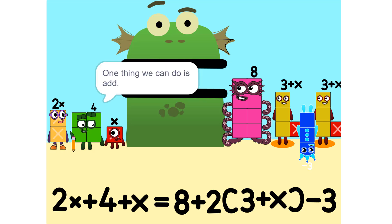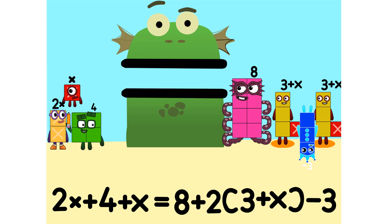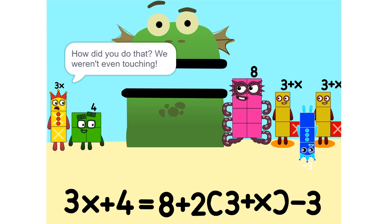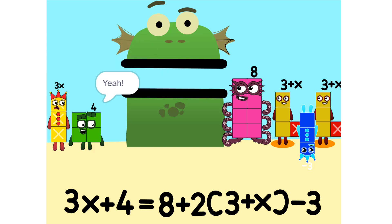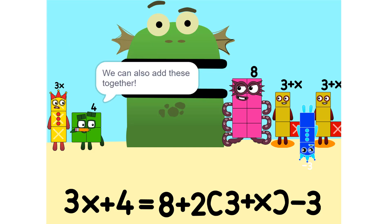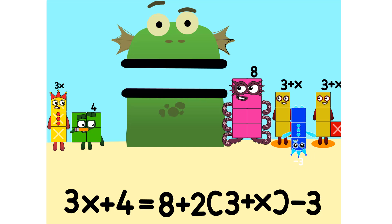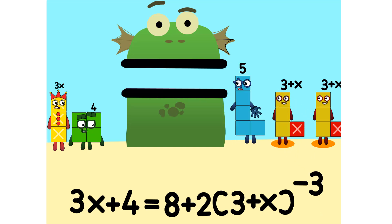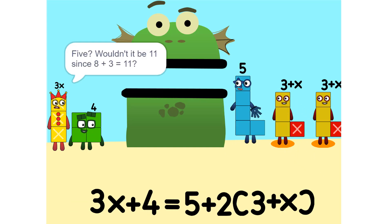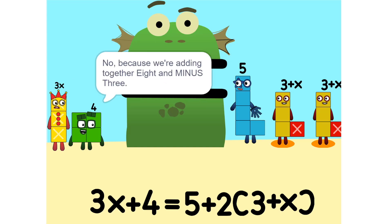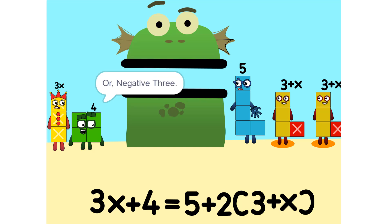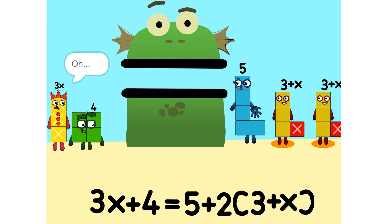One thing we can do is add these two together. How did you do that? We weren't even touching. They don't have to be. We can also add these together — 5. Wouldn't it be 11 since 8 plus 3 is 11? No, because we're adding 8 and minus 3, or negative 3. So it's 5.